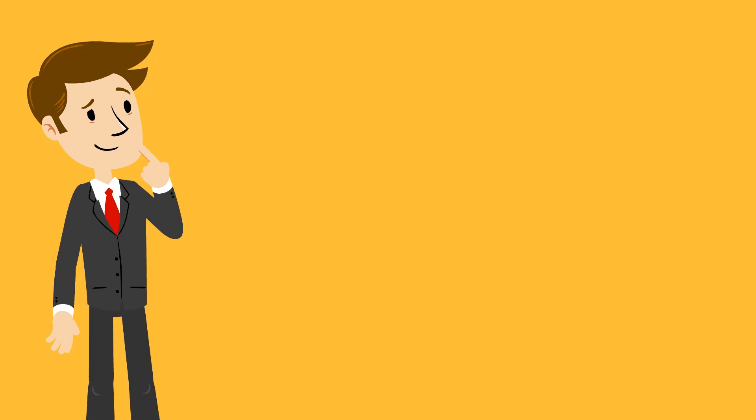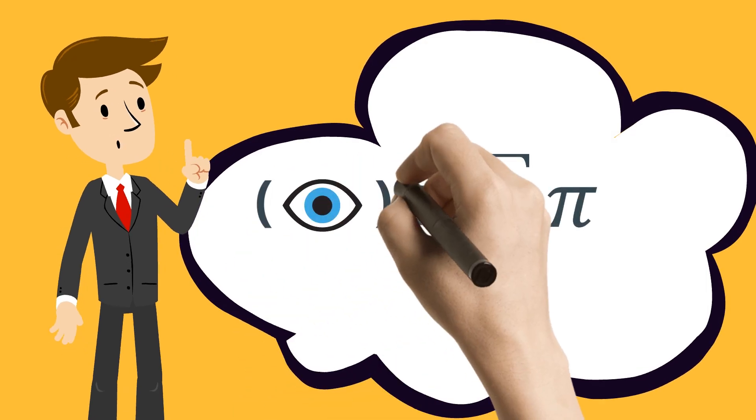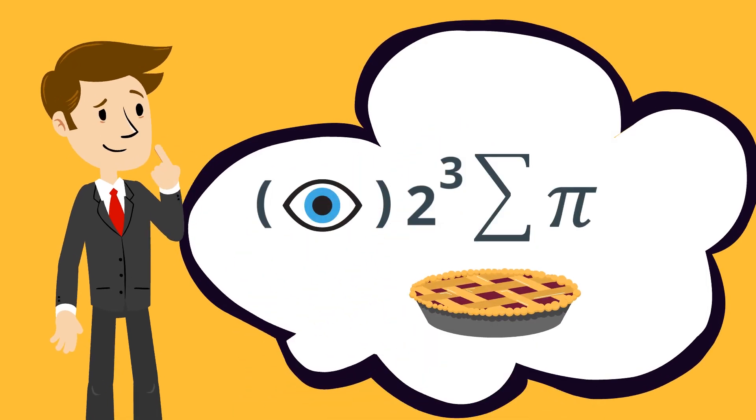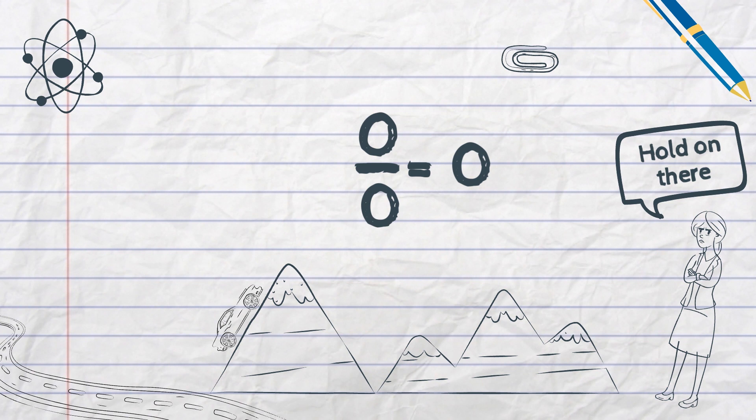Or did you? After all, just because you can write down an expression, that doesn't make it true. What gives then? Why can't we divide zero by zero? And what is it actually equal to?